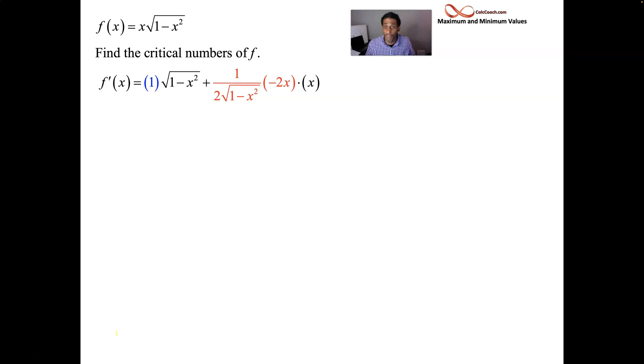On the second term, hopefully you see that there's some twos that can cancel. And then with those x's, we can multiply them. And we can put that in the numerator. So here's the simplified form of our derivative.